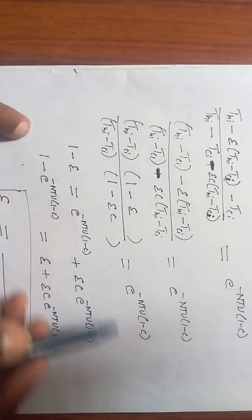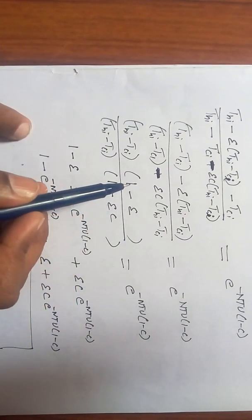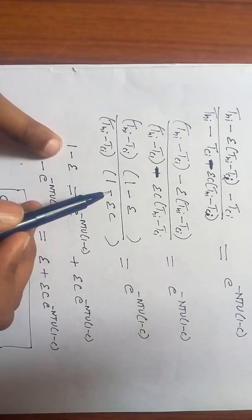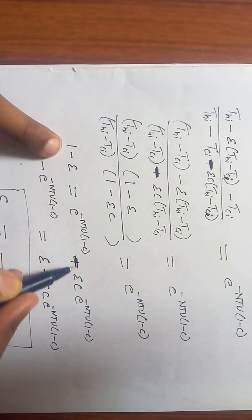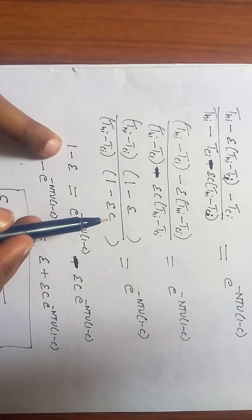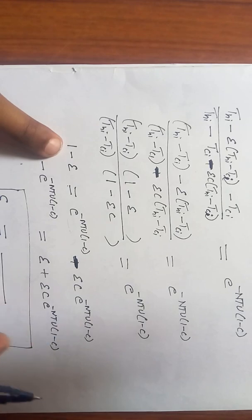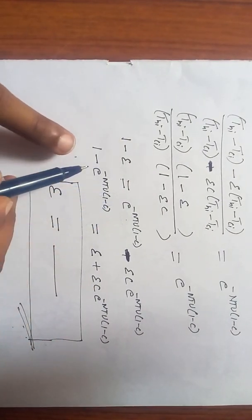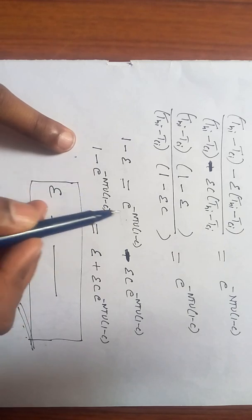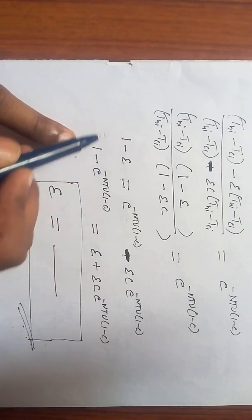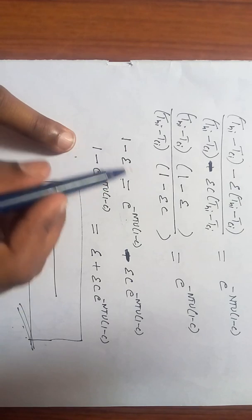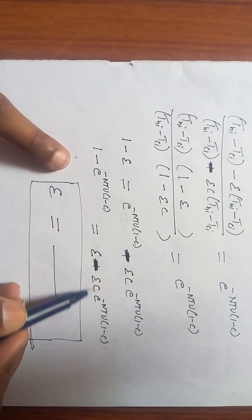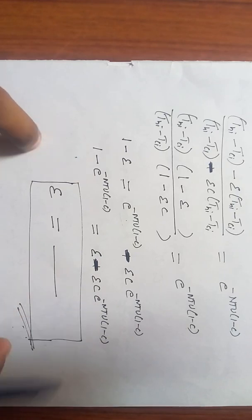So multiply this, cross multiply. 1 minus epsilon equals 1 into this factor minus epsilon C into this factor. Now make these two as LHS, take these two to one side and epsilon terms to the other side. So we will get epsilon minus epsilon C times e power minus NTU times (1 minus C).